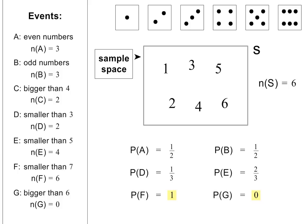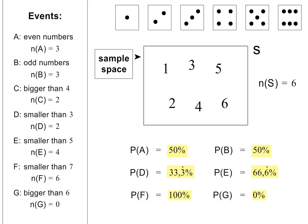Let's recap. When calculating probabilities, the smallest answer you can get is 0 and the biggest is 1. Most of the answers are fractions between 0 and 1. These can also be written as decimal fractions or as percentages. Please pause the lesson if you need more time here.